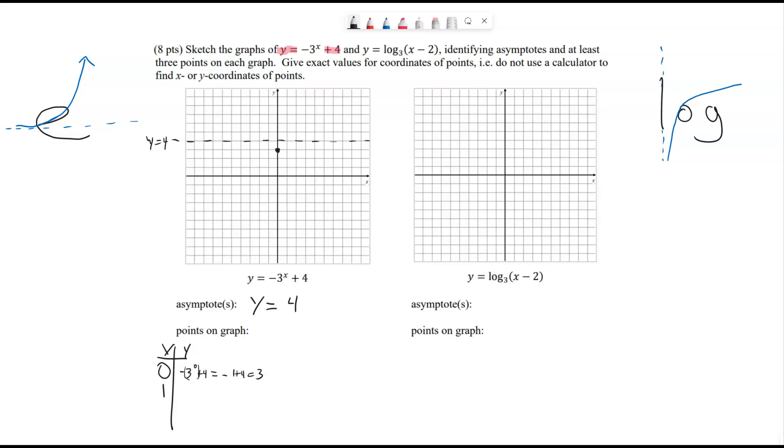Let's use 1. That's negative 3 to the 1, which is negative 3 plus 4 is 1. So 1 comma 1. And then we need to identify, it doesn't say find the intercepts or anything, so we just need one more point. Let's just use 2. Negative 3 squared, negative 9 plus 4 is negative 5.